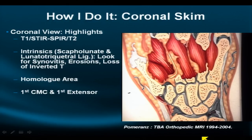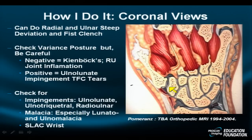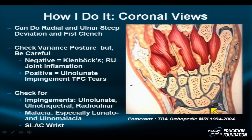We will sometimes radially and ulnarly deviate the hand or make a clenched fist view to emphasize micro or macro instability. We'll focus on the homolog region, which is a filler area that helps connect various anatomic regions and boundaries. We'll also look at the first carpal metacarpal joint for alignment, arthropathy, and the beak ligament — a portion of the medial collateral first CMC stabilizer. Steep radial and ulnar deviation and clenched fist views help augment visualization and comparison of the ulna position relative to the distal radius.